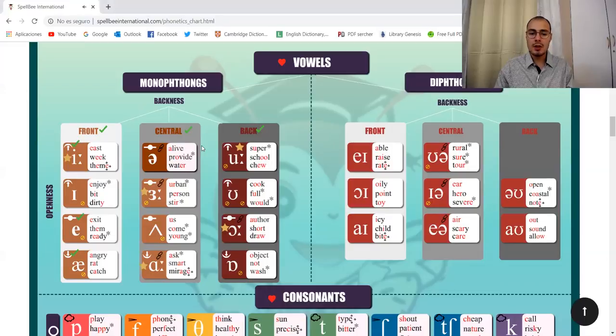If you click on the symbols, you will be able to hear the sound. And if you click on the words next to it, you will be able to hear the pronunciation of those words.